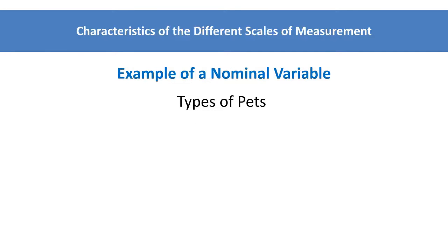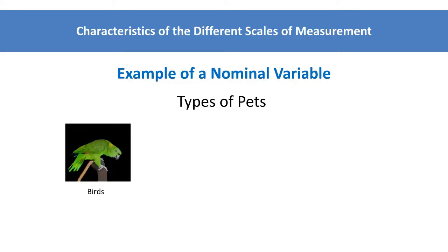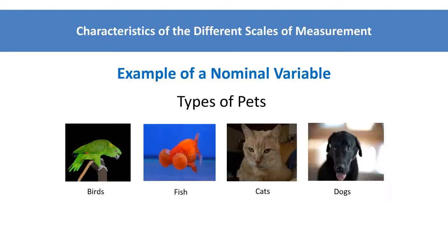For instance, types of pets could include birds, fish, cats, and dogs. None of these categories, in this case types of pets, is implicitly better than the other. Rather, the categories reflect the different types of pets.